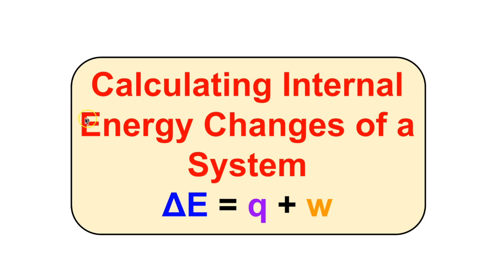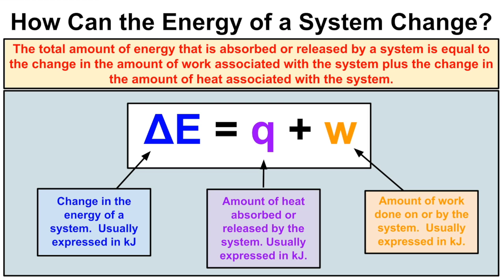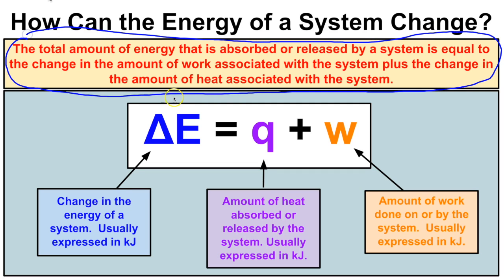Hey you guys, this is Mr. Millings, and in this video we are going to be calculating internal energy changes of a system, or calculating delta E. The total amount of energy absorbed or released by a system is equal to the change in the amount of work associated with the system plus the change in the amount of heat associated with the system.